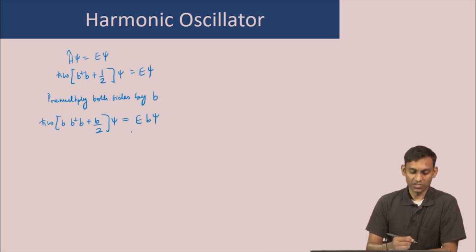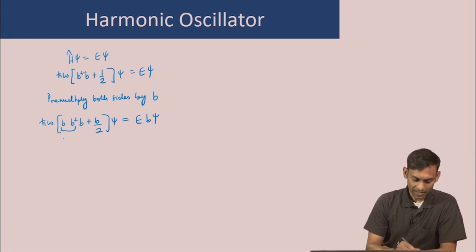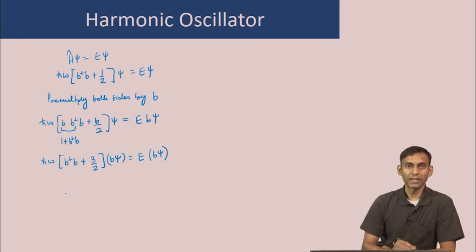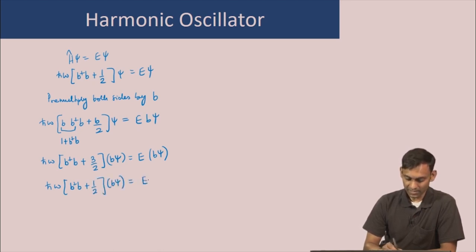We want to make the left-hand side of this equation look like the Hamiltonian. We now use the commutation relation and write b b-dagger as 1 plus b-dagger b. So this becomes h-bar omega (b-dagger b + 3/2) times b psi equals E times b psi. And if we make the operator on the left-hand side look like the Hamiltonian operator, we get h-bar omega (b-dagger b + 1/2) b of psi equals (E minus h-bar omega) b of psi.